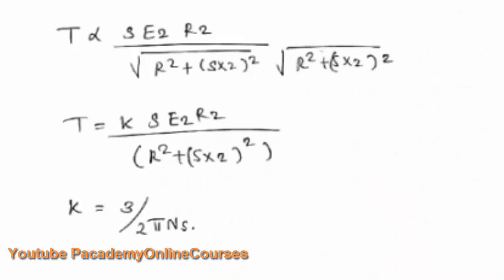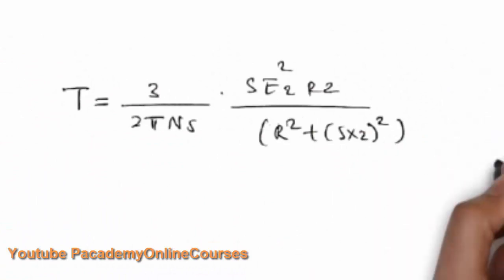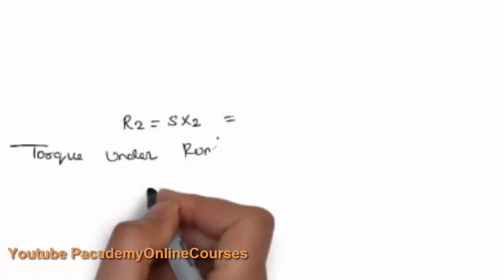Under the running condition, the torque equation becomes: T = K × S × E2² × R2 / (R2² + (S·X2)²). This is derived from the rotor current being SE2 / √(R2² + (SX2)²) and incorporating the power factor. When slip S = 1 is substituted into this equation, it reduces to the starting torque equation.